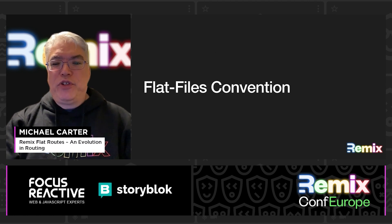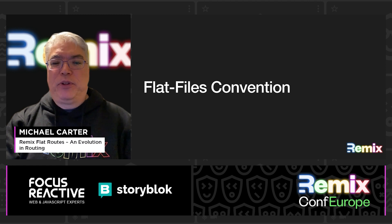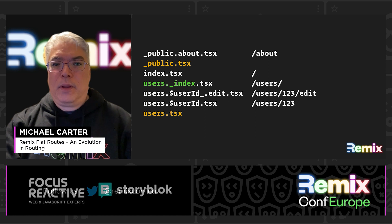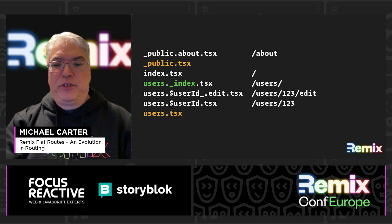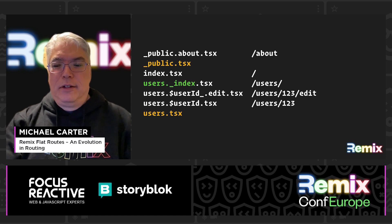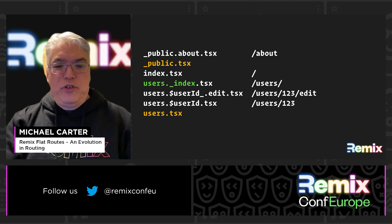Remix FlatRoutes supports two configurations: FlatFiles and FlatFolders. FlatFiles will typically be used for simpler apps, as everything is in the file name and there are no folders. Here is the same example we used before using the FlatFiles convention — there are no folders, and the entire URL structure is visible at a glance without having to drill down into separate folders. We still have to identify the index route; in this case, users slash index. Notice how we name the file users dot index.